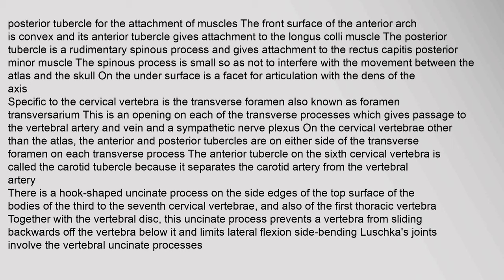The front surface of the anterior arch is convex and its anterior tubercle gives attachment to the longus coli muscle. The posterior tubercle is a rudimentary spinous process and gives attachment to the rectus capitis posterior minor muscle. The spinous process is small so as not to interfere with the movement between the atlas and the skull. On the under surface is a facet for articulation with the dens of the axis. Specific to the cervical vertebra is the transverse foramen, also known as foramen transversarium — an opening on each of the transverse processes which gives passage to the vertebral artery and vein and a sympathetic nerve plexus. Other than the atlas, the anterior and posterior tubercles are on either side of the transverse foramen. The anterior tubercle on the sixth cervical vertebra is called the carotid tubercle because it separates the carotid artery from the vertebral artery. There is a hook-shaped uncinate process on the side edges of the top surface of the bodies of the third to the seventh cervical vertebrae, and also of the first thoracic vertebra. This uncinate process prevents a vertebra from sliding backwards off the vertebra below it and limits lateral flexion.